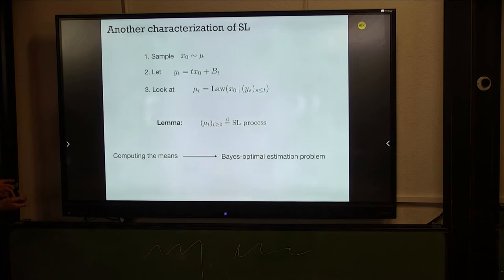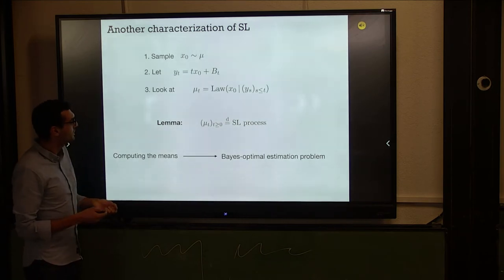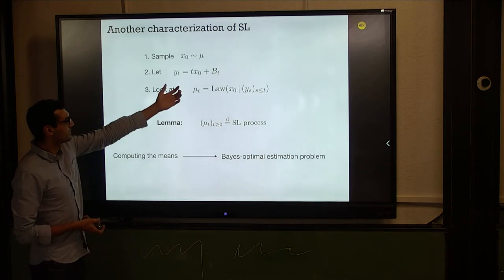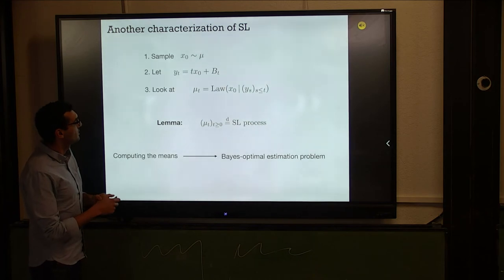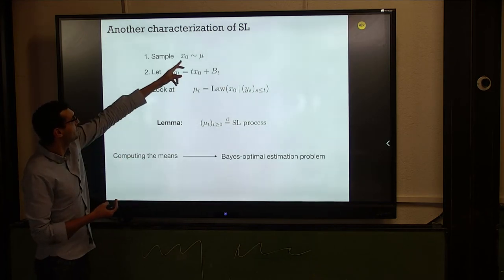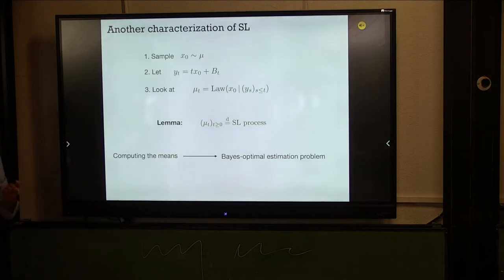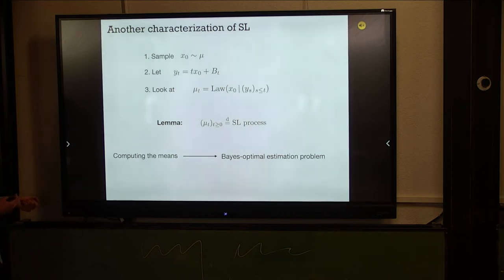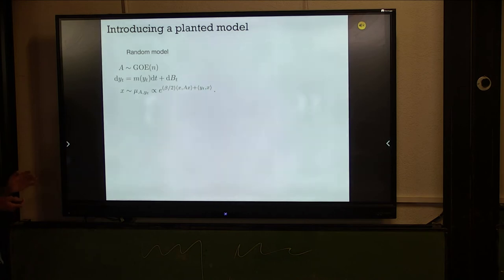To compute these means, we introduce a planted model. The original model samples A from a GOE matrix and considers the stochastic localization external field y_t to sample from the tilted measure. The problem is the prior x0 is drawn from a complicated measure mu and I don't know how to handle that directly.